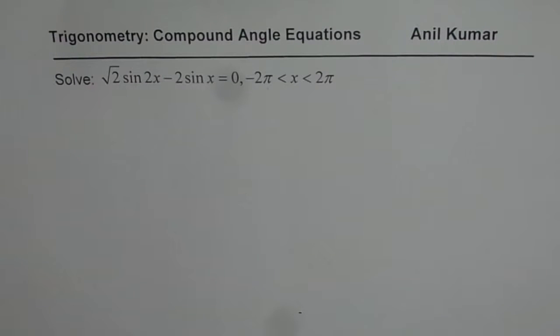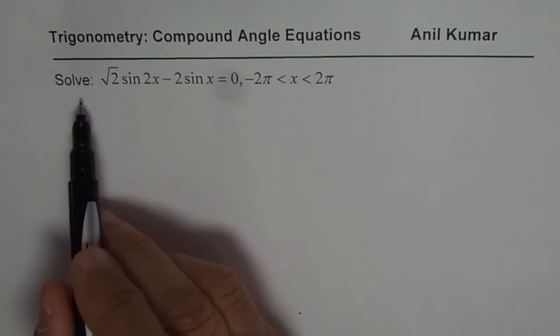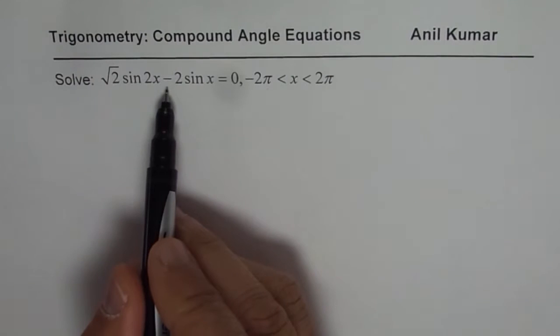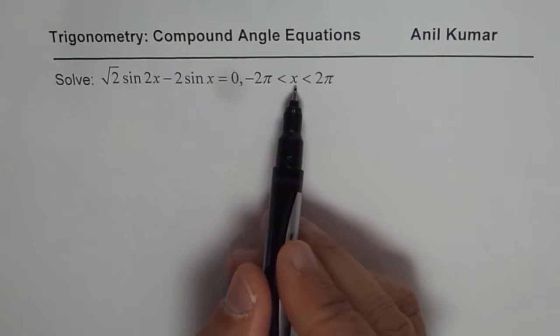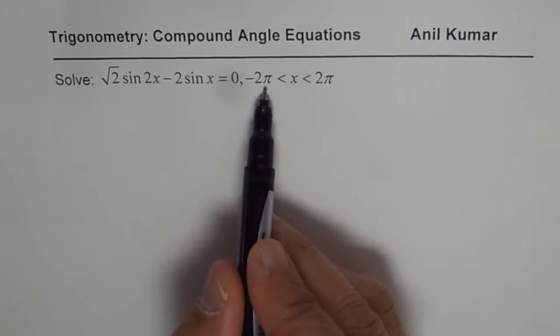I'm Anil Kumar and we'll use factoring techniques to solve an equation which involves compound angles. We need to solve √2 sin 2x - 2 sin x = 0 where x is between -2π to 2π.